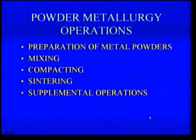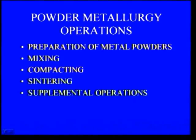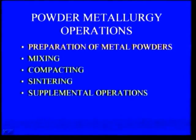We will list out the powder metallurgy operations in sequence: one, preparation of metal powders; two, mixing; three, compacting; four, sintering; five, supplemental operations. These are the sequence of operations to be followed to manufacture a component using metal powders.